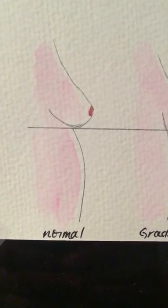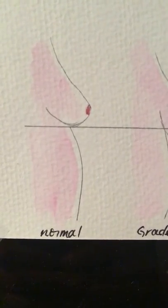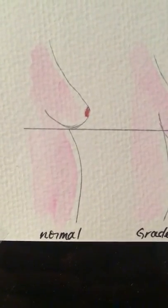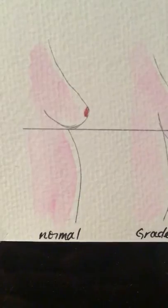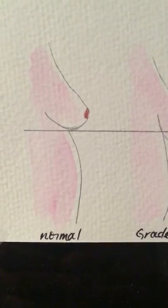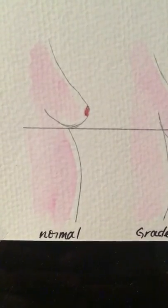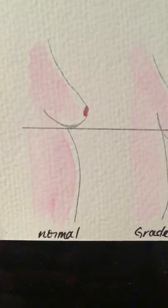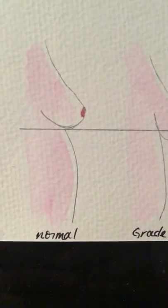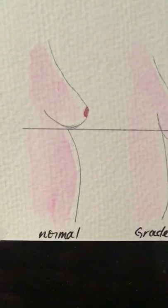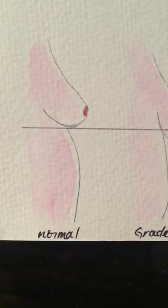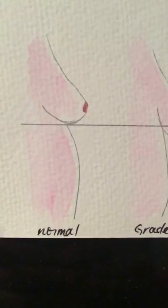Hi, this is Dr. Nina Naidoo and today I want to talk about breast ptosis. Breast ptosis refers to droop or drop of the breast. There is a plastic surgeon by the name of Dr. Paul Regnault who in 1976 described a classification system, and we use this to describe the grades of drop of the breast and how we can treat them.